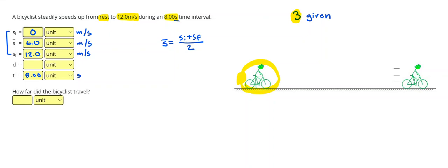Then I can find the distance by doing the average speed times the time. And I want to talk real quick about why this makes sense. So the bicyclist is speeding up from zero to 12, moving with an increasing speed. But that's not how I want you to think about it.